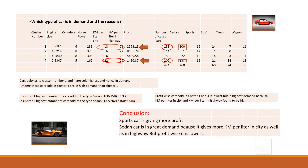Coming to the conclusion: the sports car gives more profit and is in great demand because it provides more kilometers per liter in city as well as in highway. But profit-wise for the sedan clusters (1 and 4), the profit is the lowest.